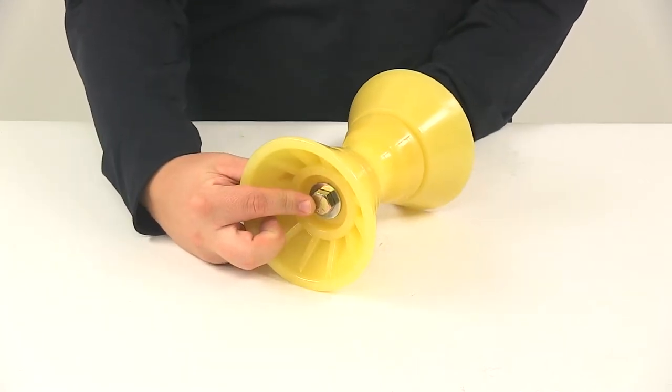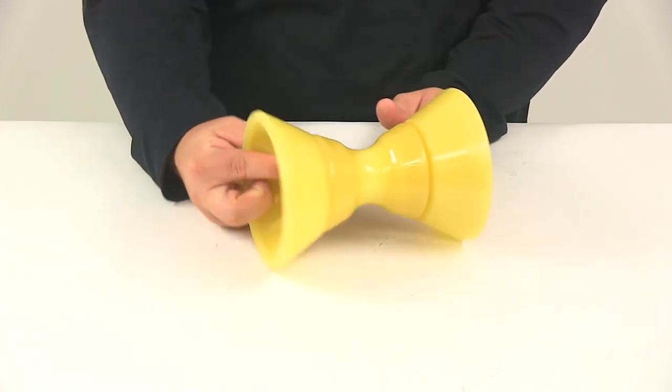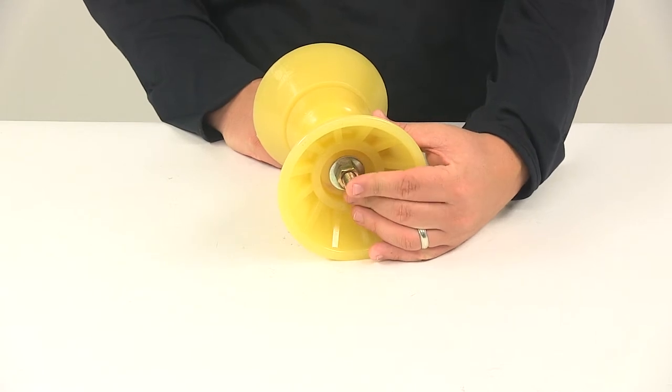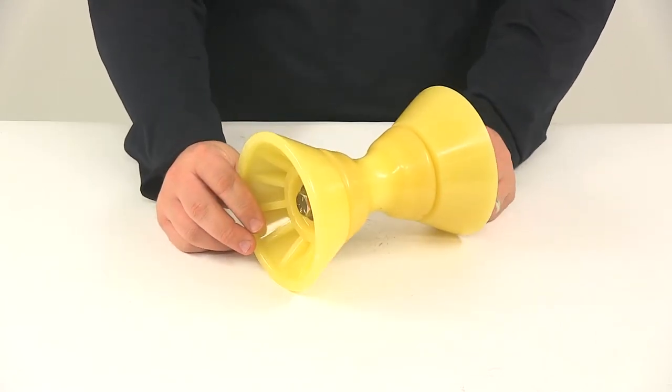The shaft or bolt is going to measure six inches long from the bottom of the bolt head to the end of the threaded portion. That's going to give us a diameter of a half inch.